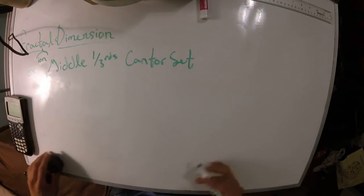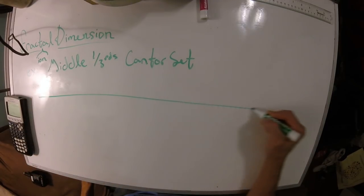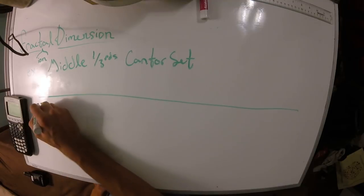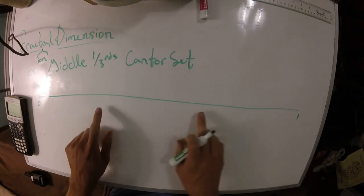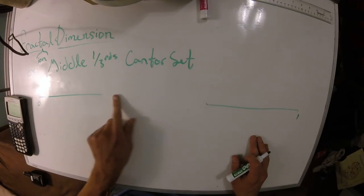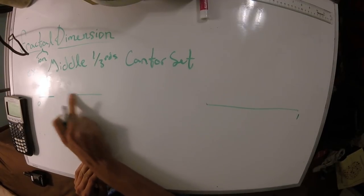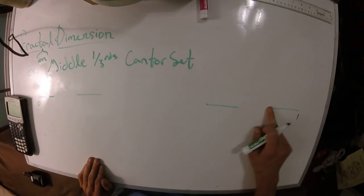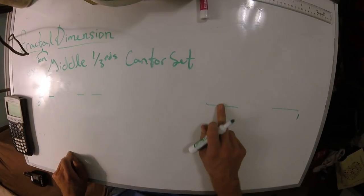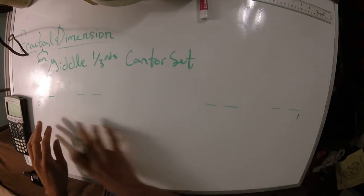The way you make the Cantor set is you start with a line. Then you erase the middle third of the line. So if this starts at zero and ends at one, you're erasing the interval from one third to two thirds. Then you repeat with what's left over - you erase the middle third from the remaining piece on the left, and the remaining piece on the right. Then again, erasing middle thirds, erasing middle thirds. You just keep erasing the middle third of these intervals that are left.